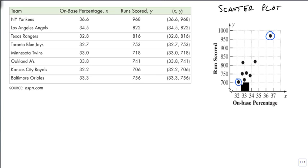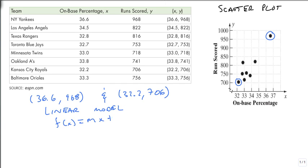So I'm going to pick the New York Yankees, which have a point of 36.6 and 968. And my other point is the Kansas City Royals, which is 32.2 and 706. And what I want to do is create a linear model.